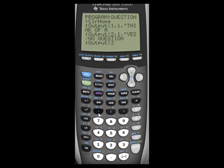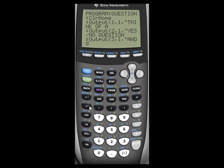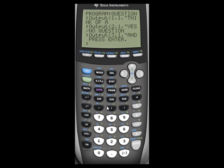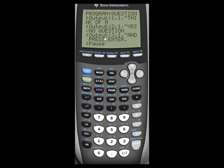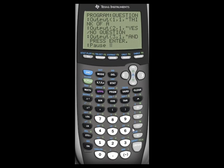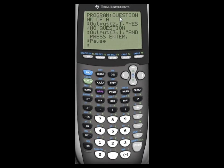And then repeat. 3, comma, 1, comma. AND. Press enter. Press output. And then program. Pause. And there. So basically, what we said here is think of a yes or no question and press enter.